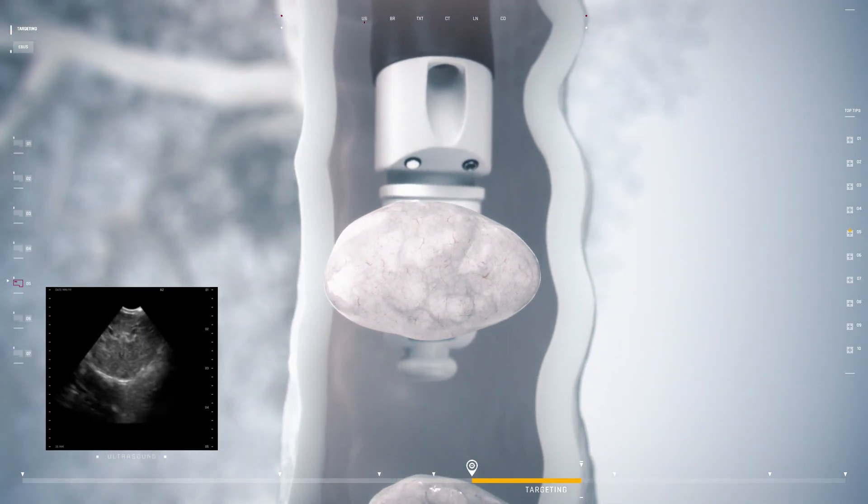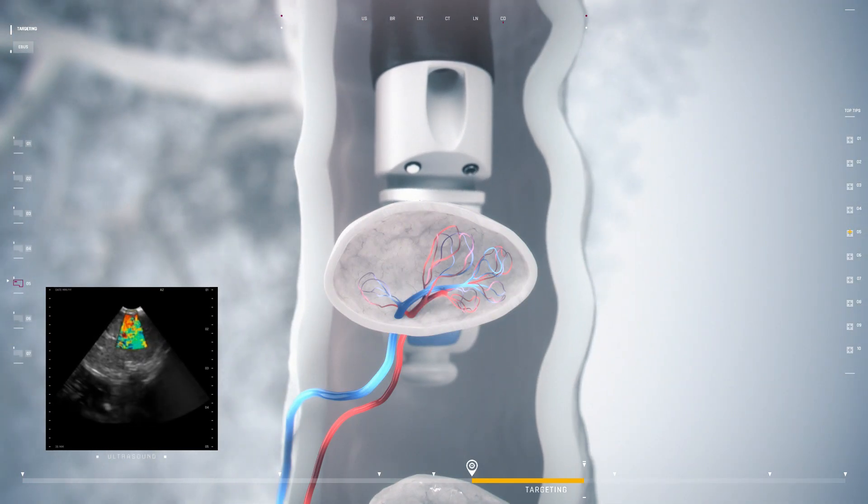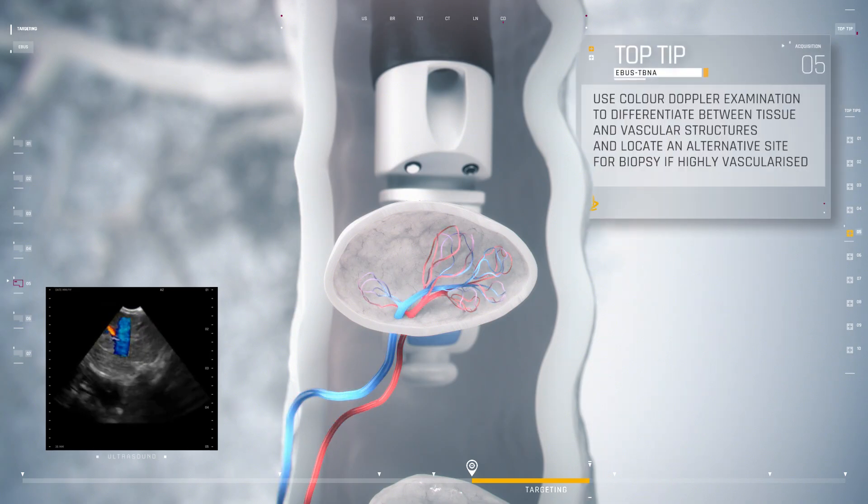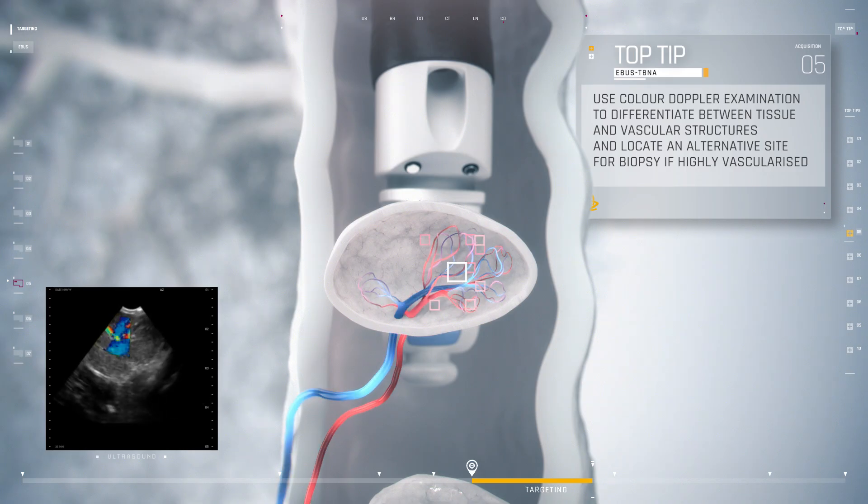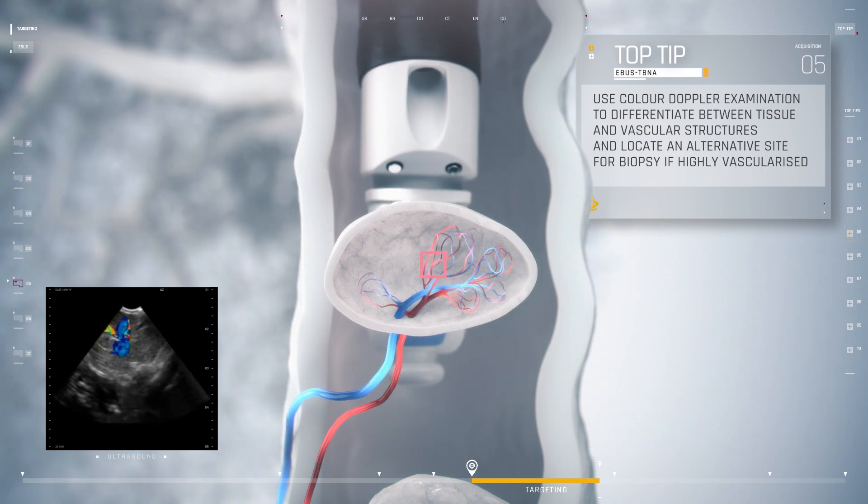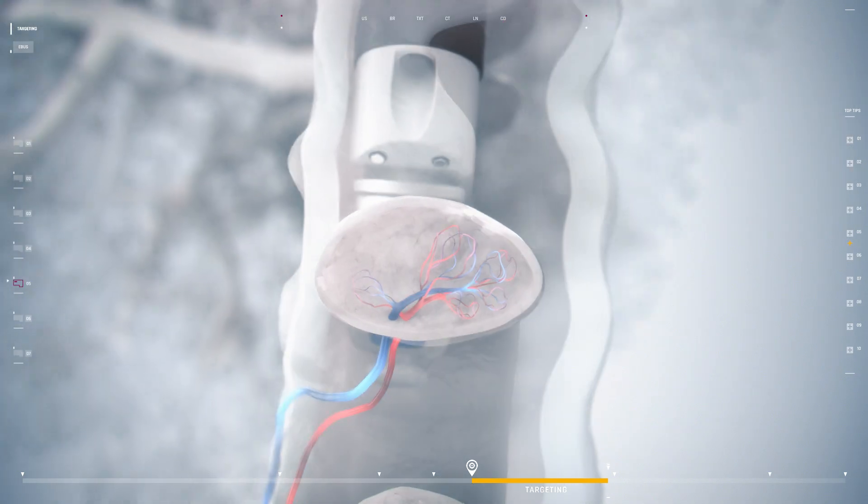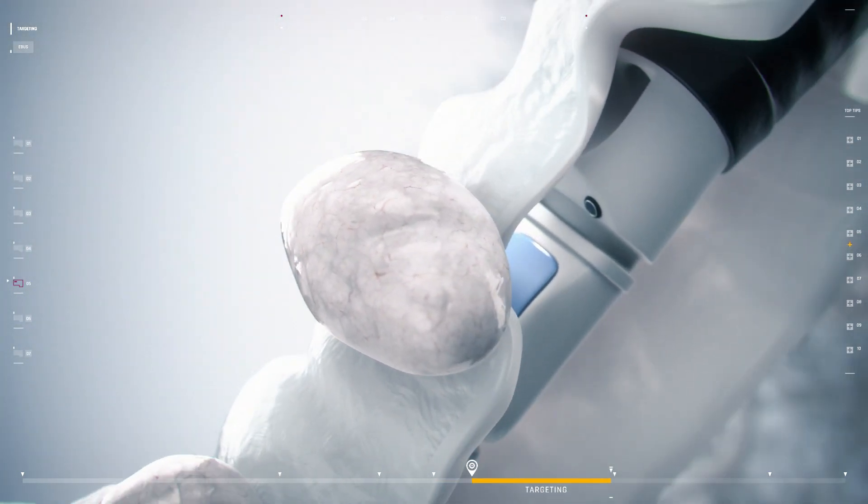Color Doppler examination can be used to support the differentiation of tissue from vascular structures. If the site of the biopsy is highly vascularized, it is advisable to locate a more suitable area of the lymph node to sample. This will minimize bleeding, which can cause contamination of the sample and blockage of the needle.